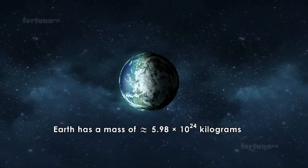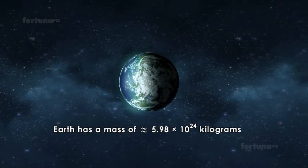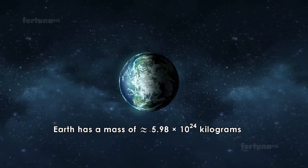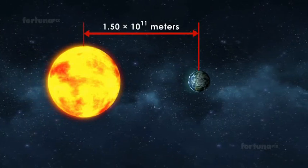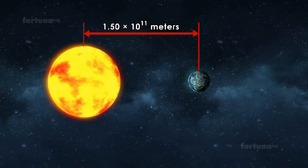The earth has a mass of roughly 5.98 times 10 raised to 24 kilograms. The distance between the sun and the earth is about 1.50 times 10 raised to 11 meters.